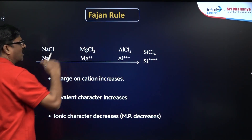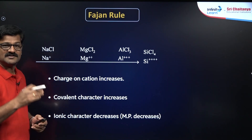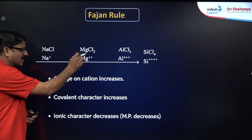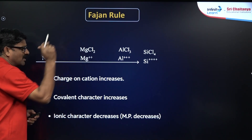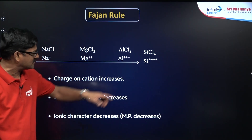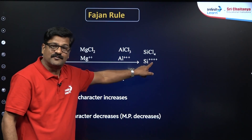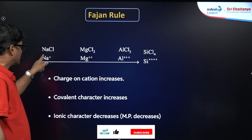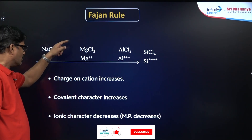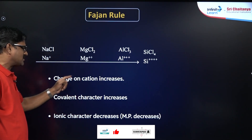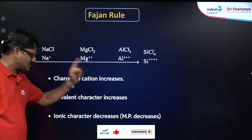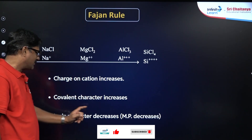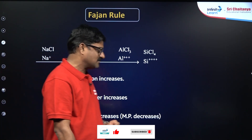Also consider sodium chloride, magnesium chloride, aluminium chloride — the charge on the cation is increasing: Na⁺, Mg²⁺, Al³⁺, Si⁴⁺. As the charge on the cation increases, covalent character increases and ionic character decreases.